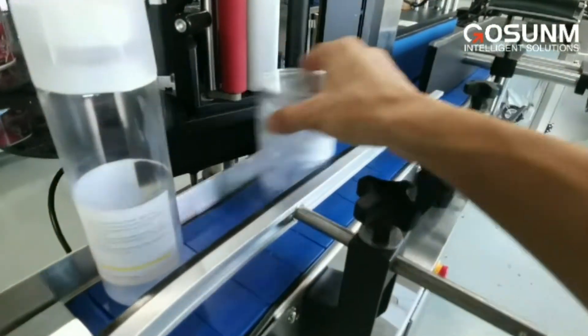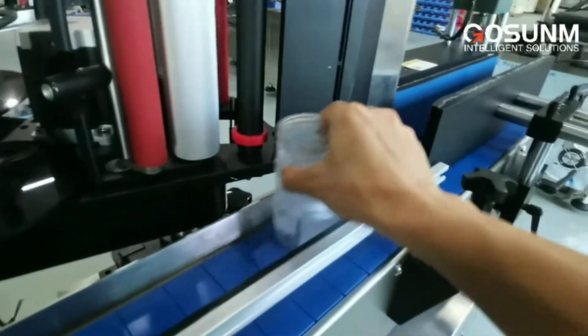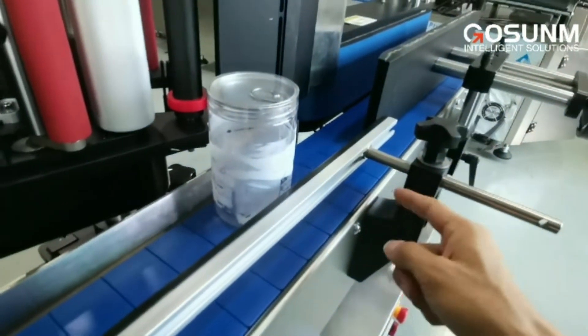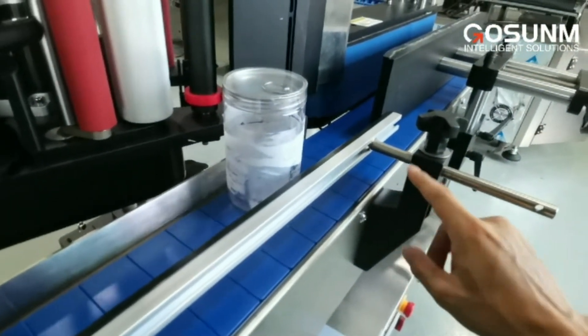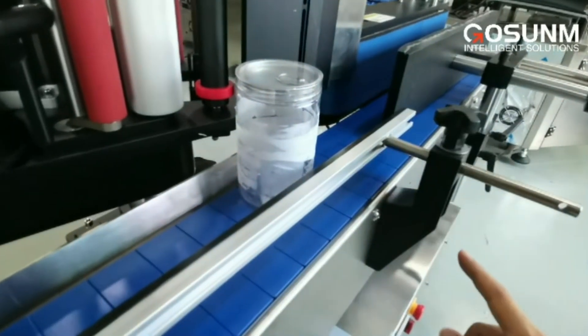When the bottle moves forward, we will mount a sensor, a product sensor, to detect the bottle incoming.